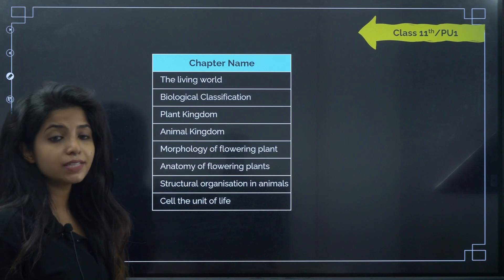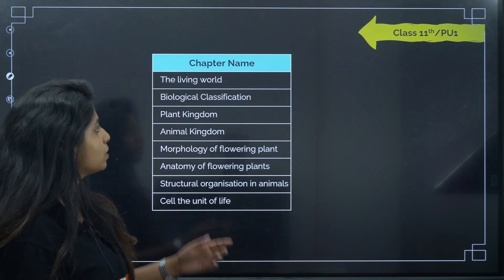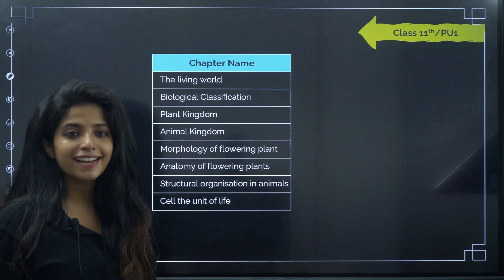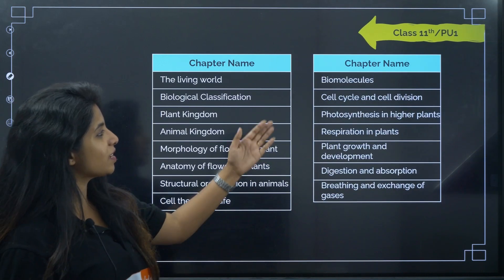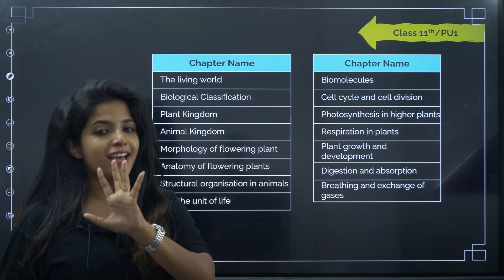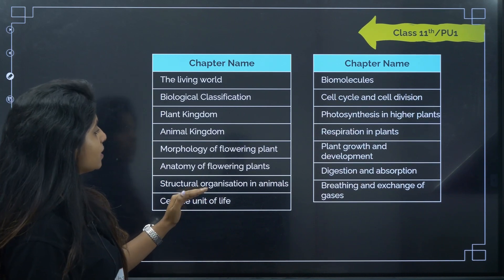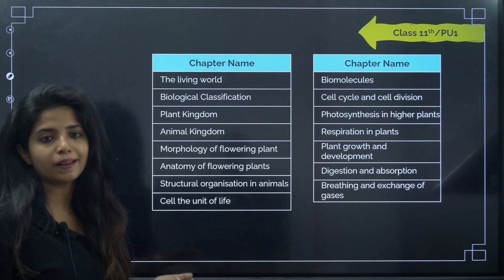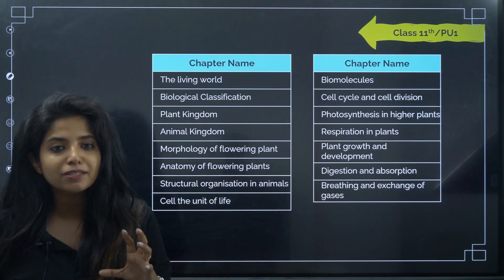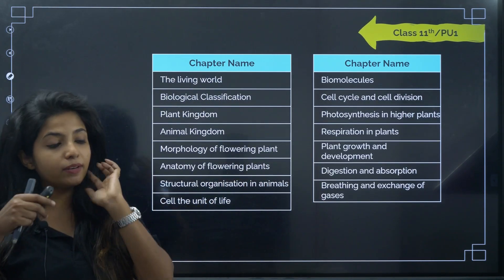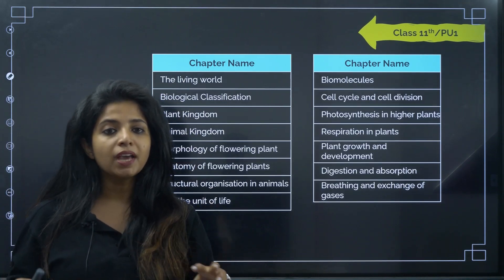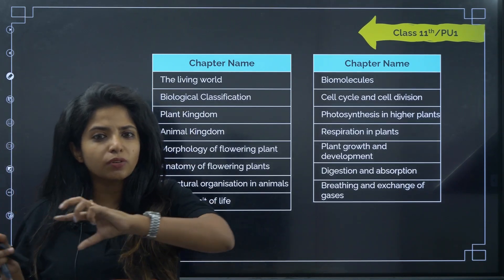Now let's talk about the 11th syllabus. It starts from 'The Living World,' includes 'Cell: The Unit of Life,' and goes up to 'Biomolecules,' 'Breathing and Exchanging Gases,' and more. Before that, I want to say something about animal kingdom and plant kingdom — this might be the most detailed version of animal and plant kingdom that you'll be studying.